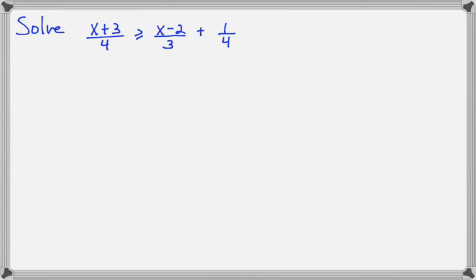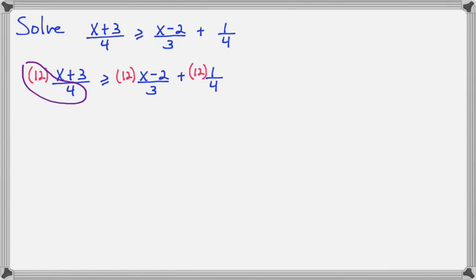Okay, now here's one with a fraction. So let's find our common denominator, which is 12. And let's multiply everything by 12. So 12 over 4 makes 3. This one will simplify to 3 times x plus 3.